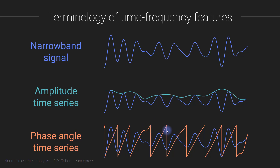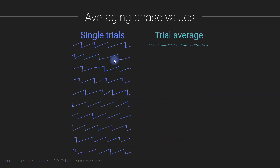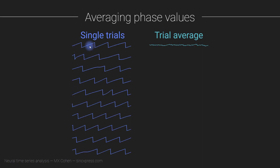So can't we do the same thing with the phase angle time series? Here we have a bunch of single trials — these are the phase angle time series from a bunch of different trials. And here I've just averaged them all together, and it looks like mostly a flat line. I'm going to say that this is wrong. This is not the appropriate way to average phase angles over different trials. If you don't already know why, I encourage you to pause the video and think about it.